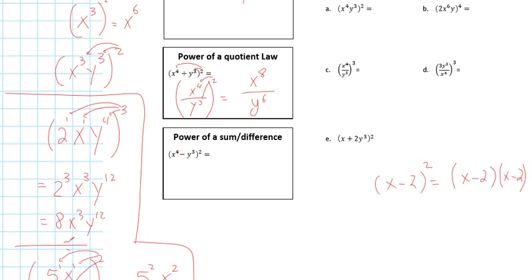If I write this twice, x4 minus y cubed times x4 minus y cubed. That's what it means. To the power of 2, that means I have to write twice.